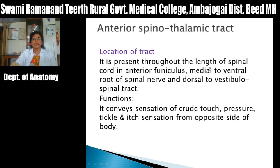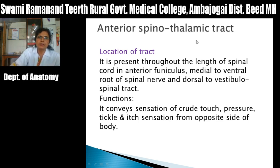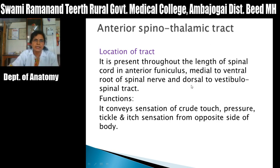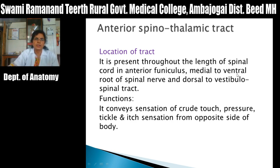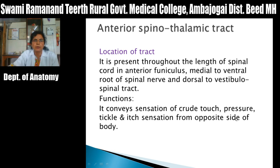The anterior spinothalamic tract is present in the anterior funiculus between the spinal cord and thalamus. Location: it is present throughout the length of the spinal cord in the anterior funiculus, medial to the ventral root of the spinal nerve and dorsal to the vestibulospinal tract. It is present medial to the emerging fibers of the ventral root. Function: it conveys sensation of crude touch, pressure, tickle sensation, and itch sensation from the opposite side of the body.